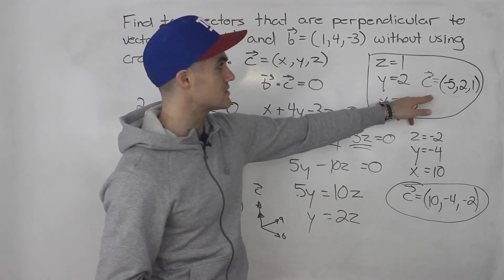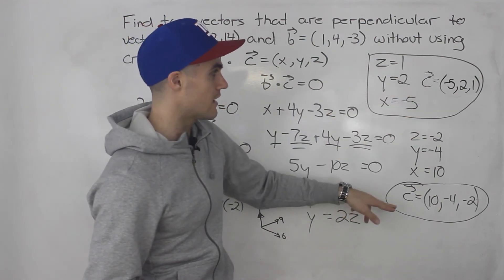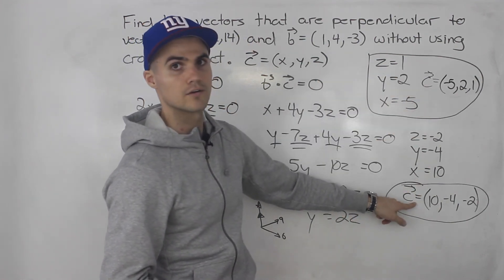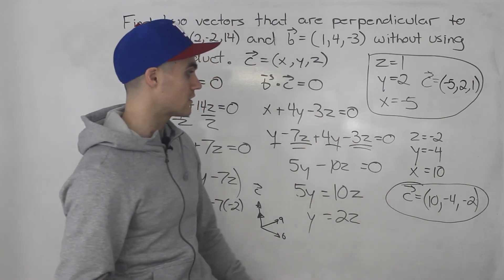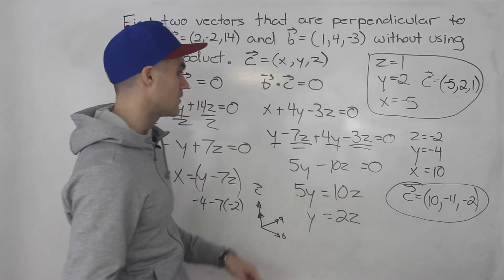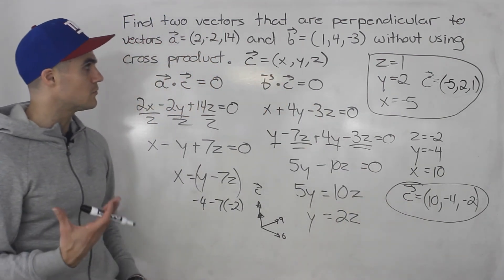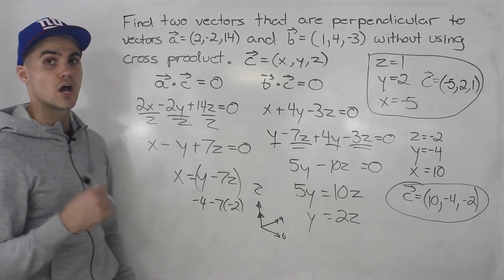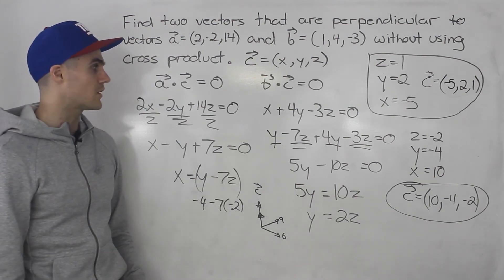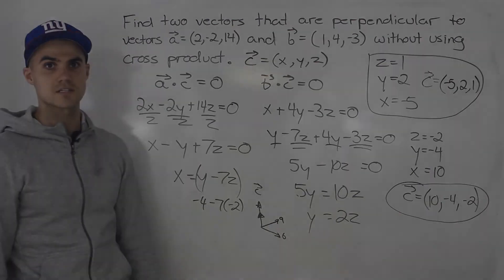So whenever you get this, you can just test it. And then you can just find collinear vectors to find that other vector. And that will always work as well. So a bit of a more complex process if you're not using the cross product. But nevertheless, it does work.